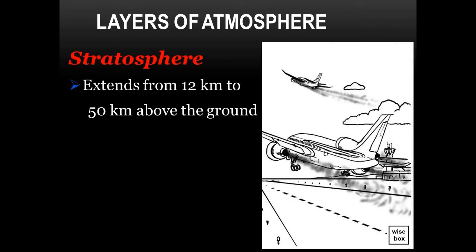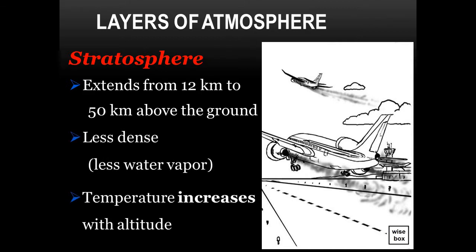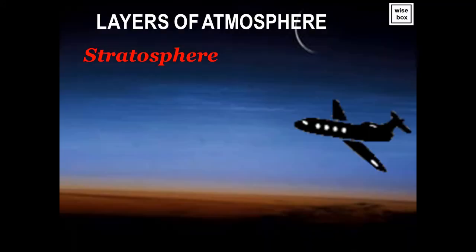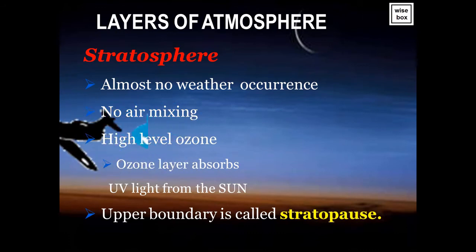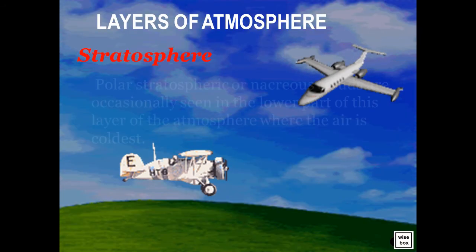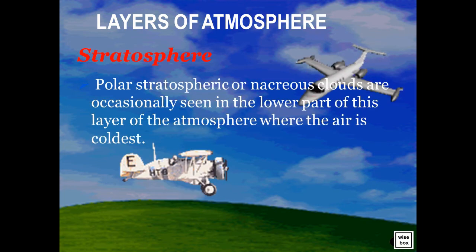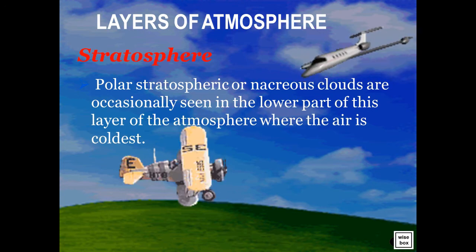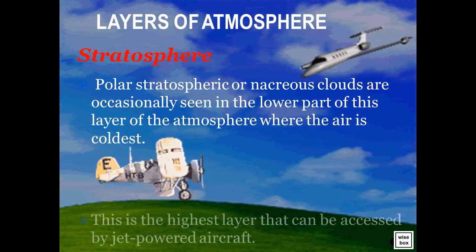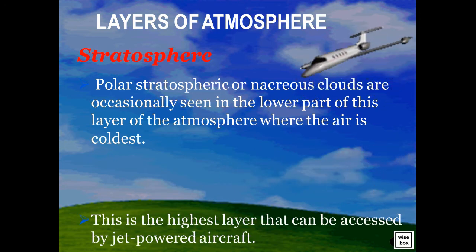The stratosphere extends from 12 kilometers to 50 kilometers above the ground. It is less dense due to less water vapor. Also, temperature in the stratosphere increases with altitude. There is almost no weather occurrence and there is no air mixing. Polar stratospheric, or nacreous, clouds are occasionally seen in the lower part of this layer where the air is coldest. The stratosphere is the highest layer that can be accessed by jet-powered aircraft.